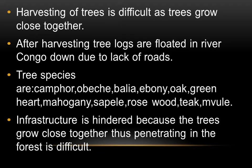Even in areas where trees are harvested, the logs are very big and cannot be transported by vehicle. So they are floated in River Congo downstream, due to lack of roads, to the mouth of River Congo where they are collected at the beach of the Atlantic Ocean. Tree species found there include kamfa, obeche, balia, ebony, oak, greenheart, mahogany, sapele, rosewood, teak, and mvule.